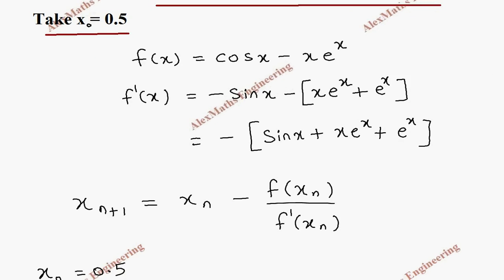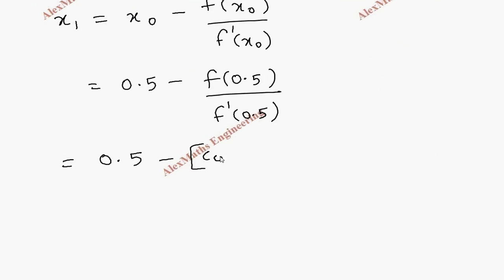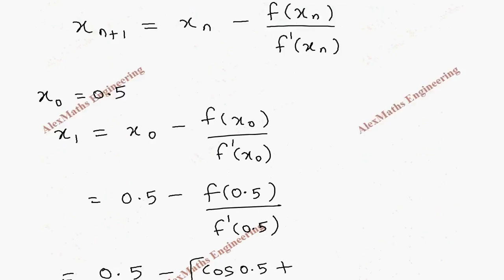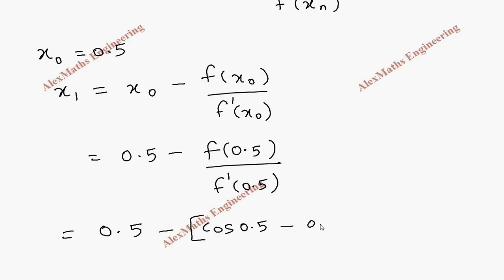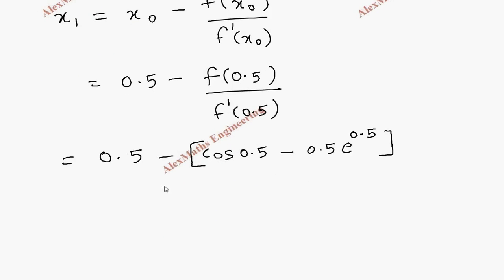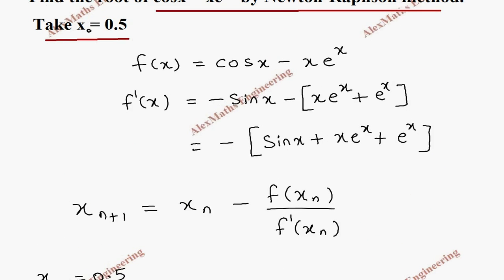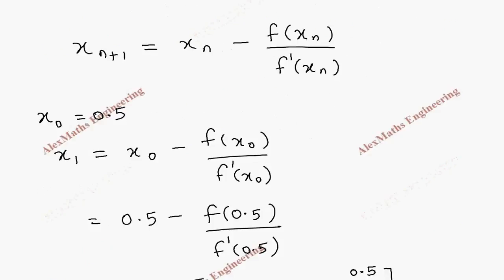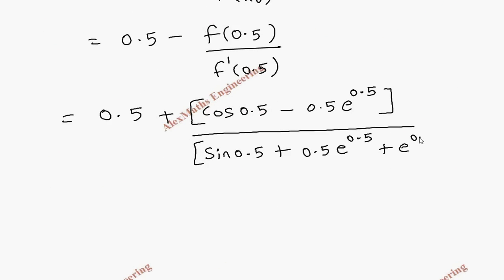Substituting 0.5 into f(x): the numerator is cos(0.5) - 0.5·e^0.5. For the denominator from f'(x), taking the minus sign common we get plus, so it is sin(0.5) + 0.5·e^0.5 + e^0.5.